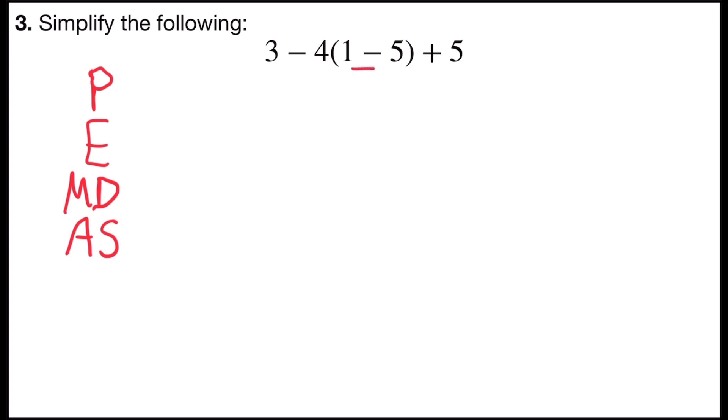And so I'm going to start with the grouping symbols, the parentheses, and take 1 minus 5. 1 minus 5 leaves me with negative 4.